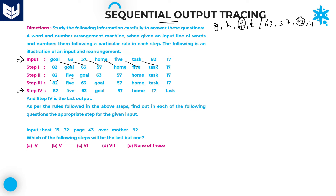So the numbers are written from greatest to smallest, whereas the words are written in English alphabetical order — that is F first. In the next step, the second highest number comes. After that, again the second highest number is placed, and then the next letter in alphabetical order, G. After that, the third highest number 57, then H.